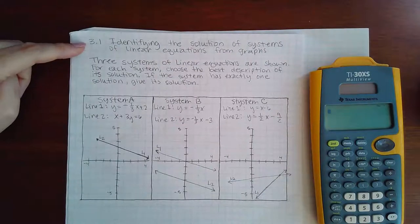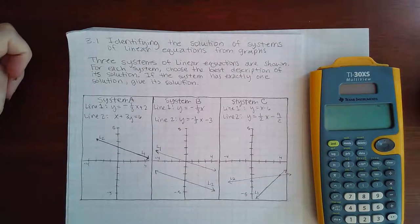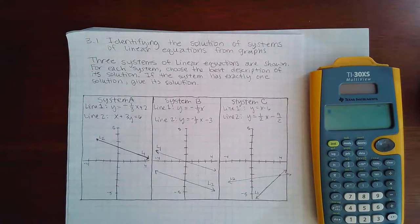This is topic 3.1, identifying the solution of systems of linear equations from graphs. Three systems of linear equations are shown. For each system, choose the best description of its solutions. If the system has exactly one solution, give its solution.